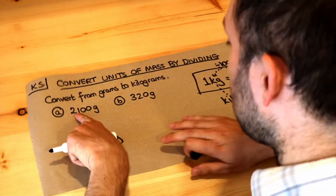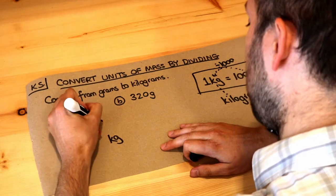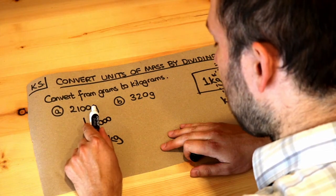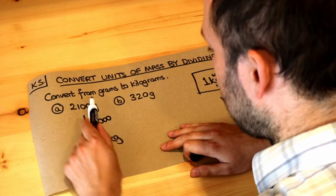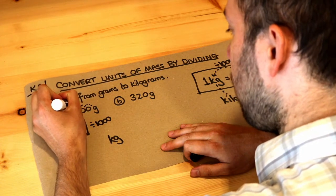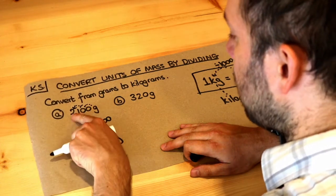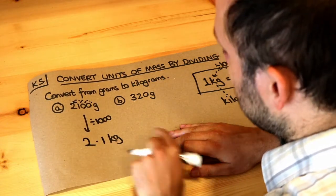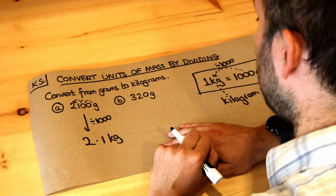So we need to divide 2100 by a thousand. The decimal point is currently at the end, and if we divide by a thousand, because that has three zeros, we move the decimal point three places. So one, two, three - it's now between the two and the one, so it's 2.1 kilograms. We don't need to put extra zeros at the end because they're after the decimal point.